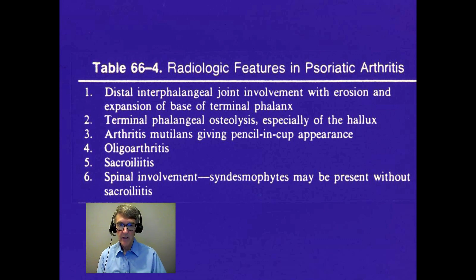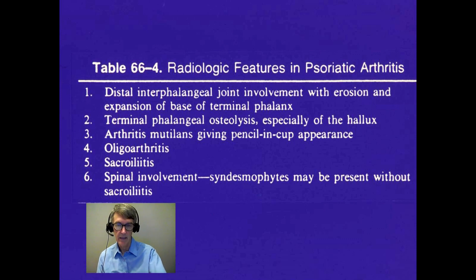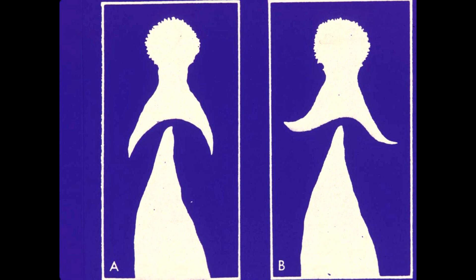There are certain radiologic features on x-ray of patients with psoriatic arthritis. There is distal interphalangeal joint involvement with erosion at the base of the terminal phalanx and osteolysis just proximal to that. Arthritis mutilans can give a pencil and cup appearance. There can also be oligoarthritis, sacroiliac arthritis, and syndesmophytes without sacroiliitis — calcification of the annulus fibrosis. This is the classic pencil and cup appearance seen on x-ray, especially with DIP involvement or arthritis mutilans.